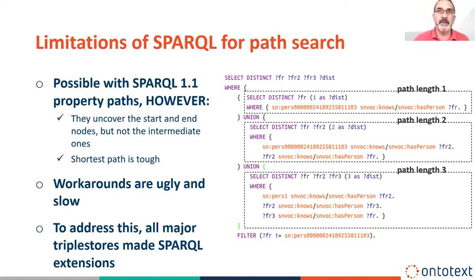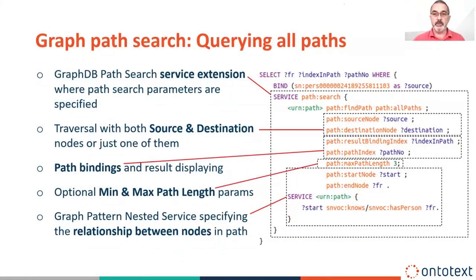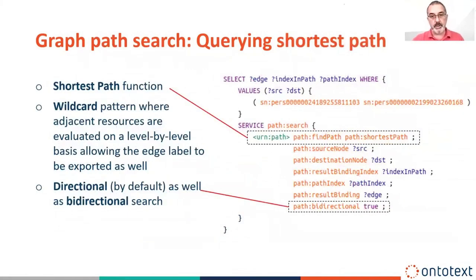To address this, all graph database vendors did some SPARQL extensions. That's how our extension looks: you have a SERVICE clause in SPARQL where you specify you want to do an all-paths search, provide source and destination — or just the source — optionally specify the maximum path length, and specify the pattern you want to trace, including specific conditions and patterns in the graph required for each step of the path. You can also do shortest path and bidirectional search. So we cover all flavors of this task.